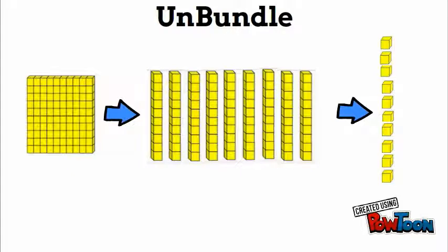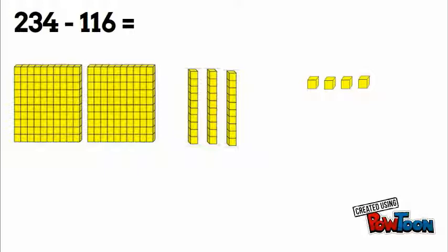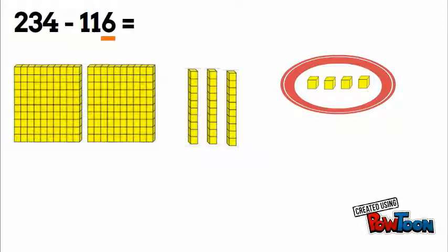Let's see how that applies to subtraction. First problem: 234 minus 116. We're gonna make 234. We're gonna start with our ones place, that's asking us to take six away, but we only have four of them.